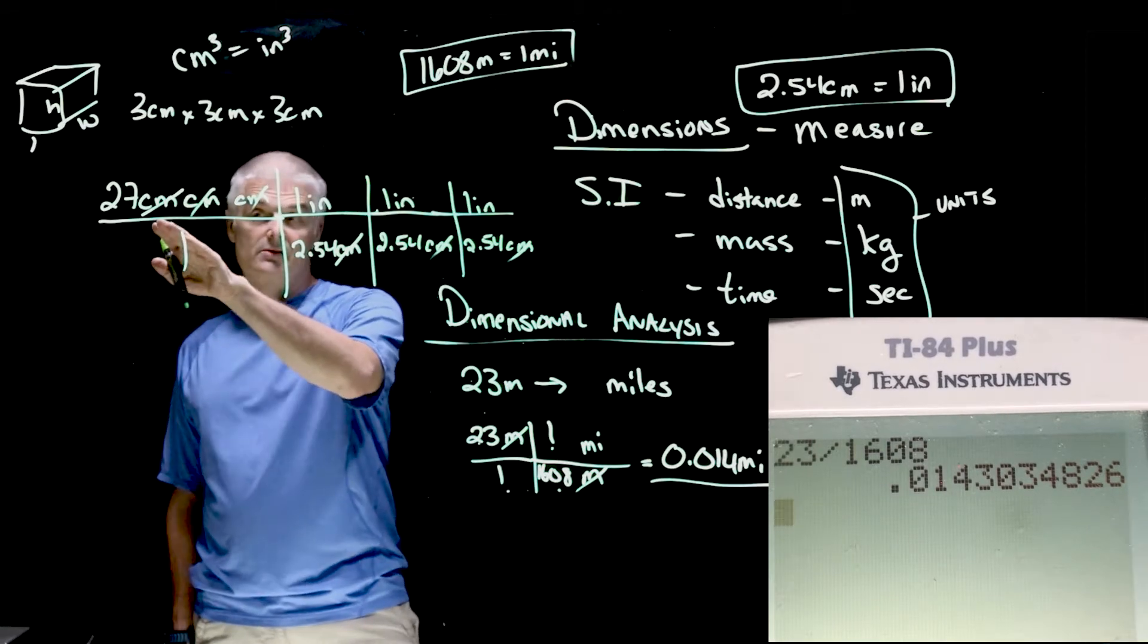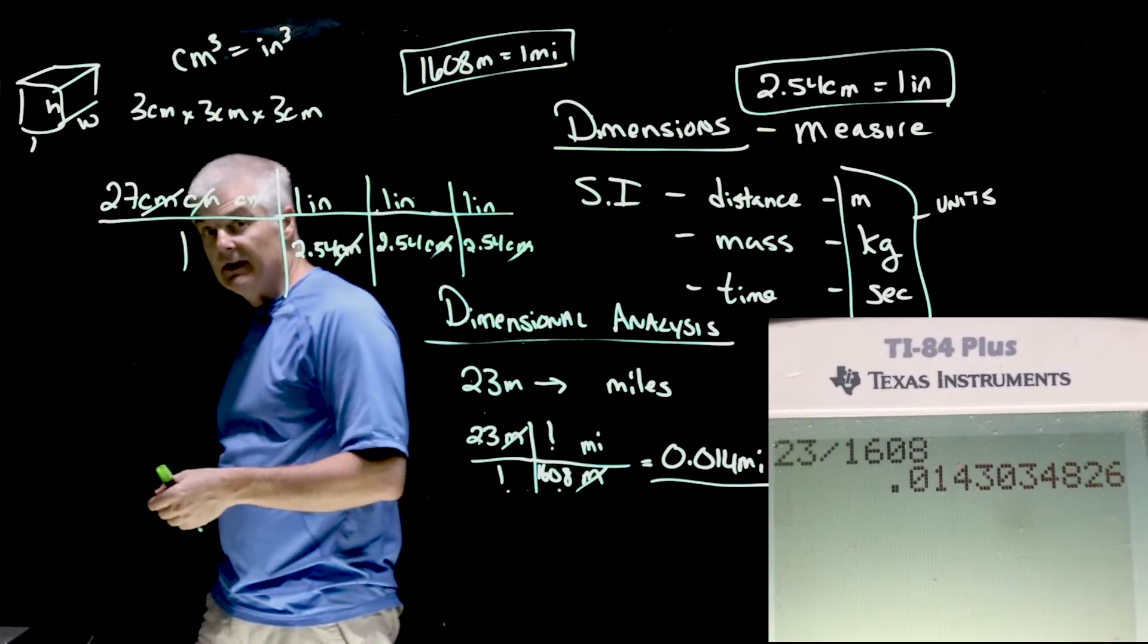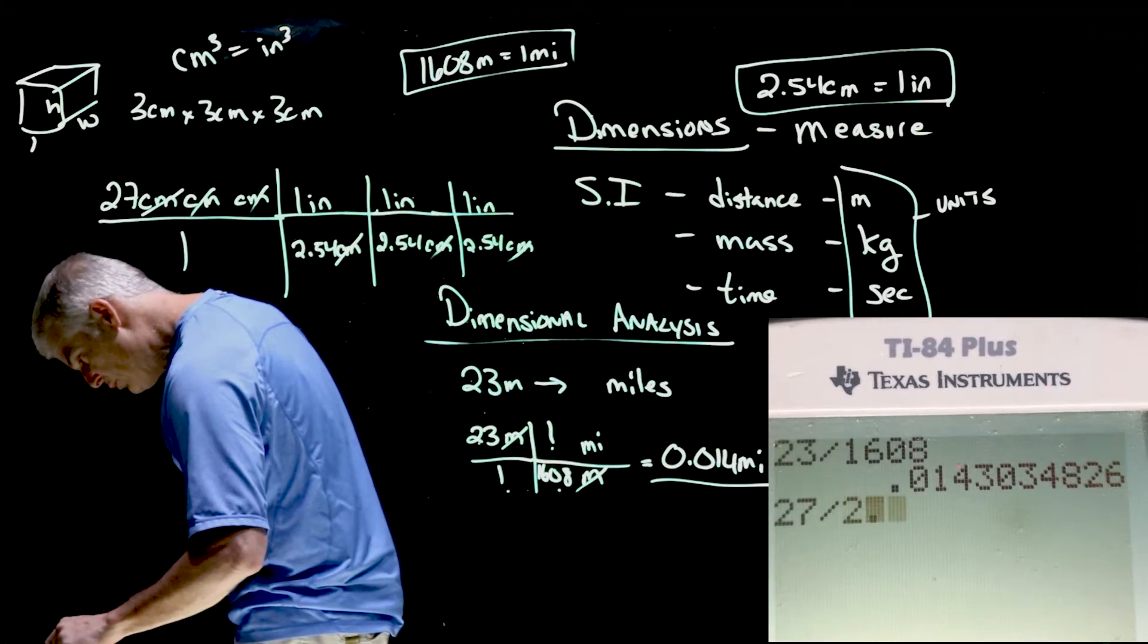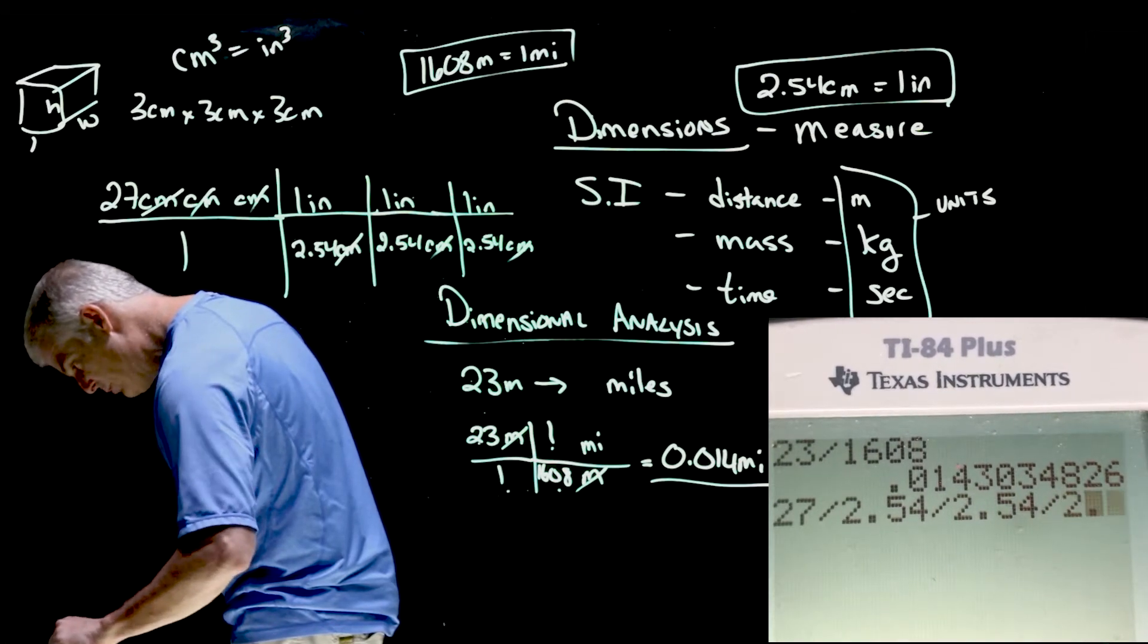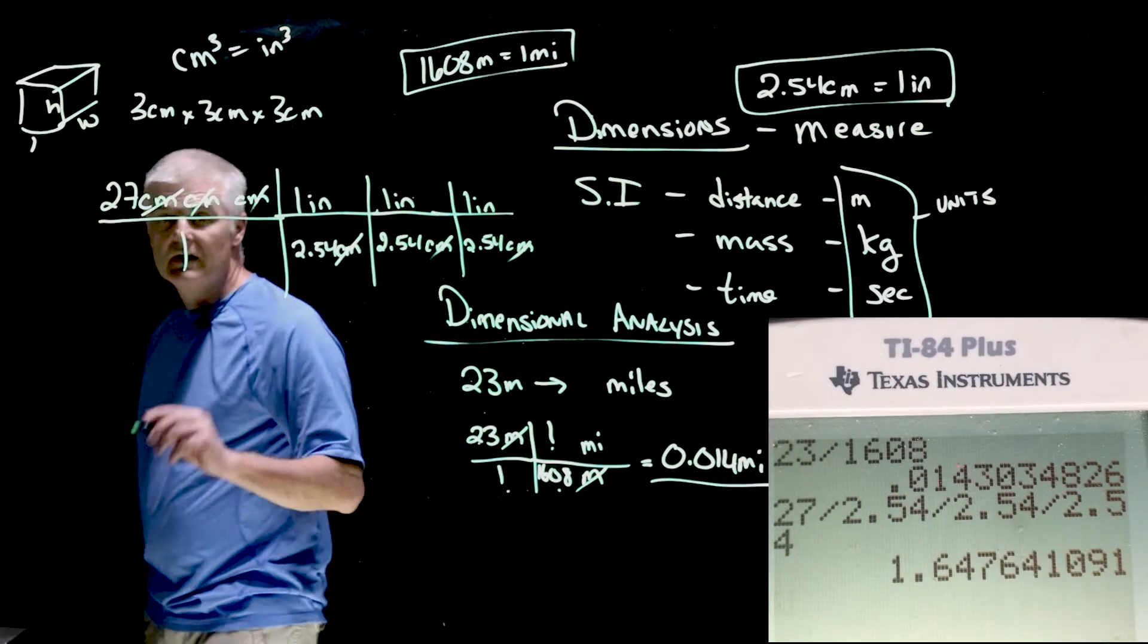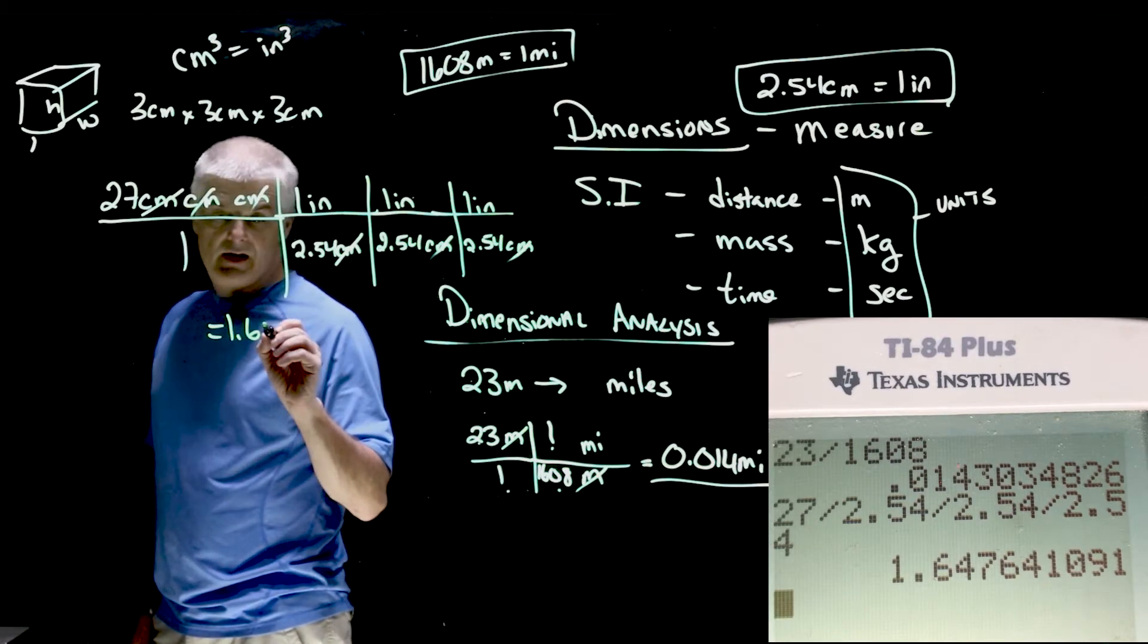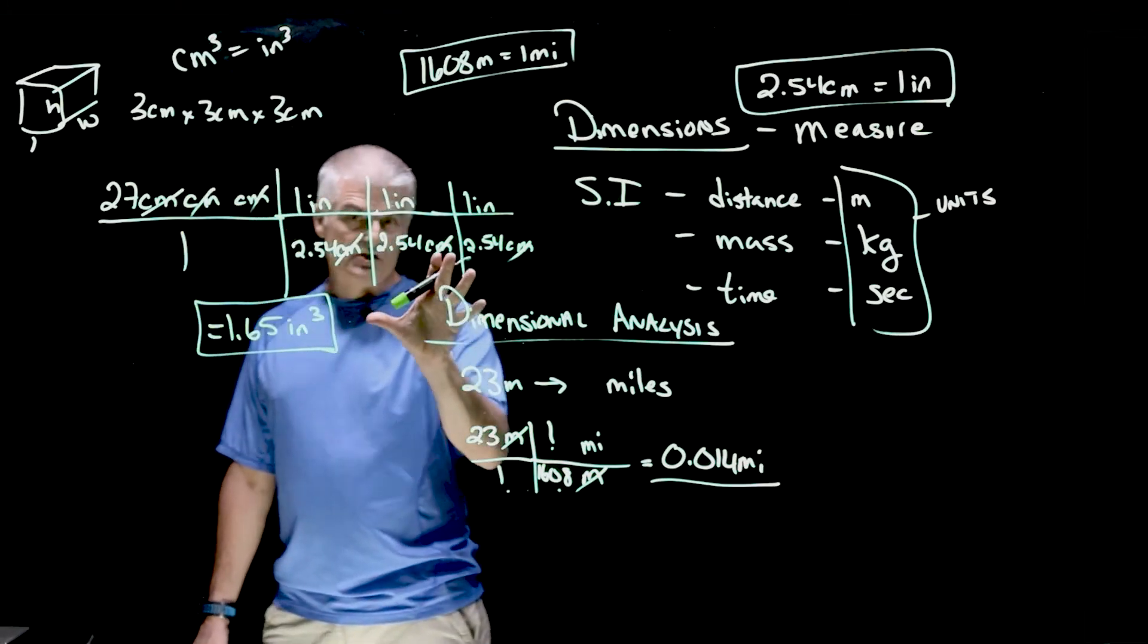Now, on my calculator, remember the rule I said earlier is everything on top is multiplied, everything on the bottom is divided. So watch what I do in the calculator. I'm going to take 27 divided by 2.54 divided by 2.54 divided by 2.54. I do it three times. And this comes out to 1.65 inch cubed. So those are some simple conversions.